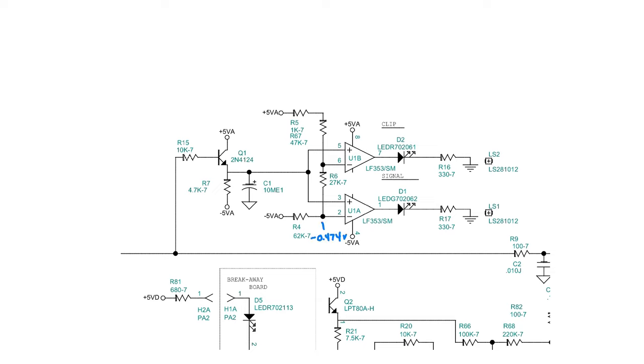That's also connected to the bottom comparator, which is connected to the signal LED. So negative 0.474 volts is the comparison voltage for the signal LED. We can use the same technique to calculate the top comparison voltage for the clip LED, which comes out to 1.497 volts.